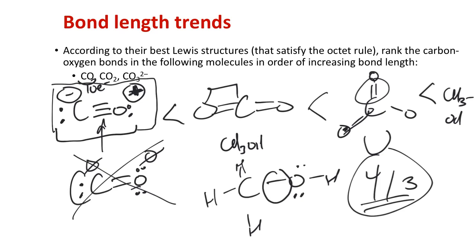We use Lewis structures to build a model to help us understand the bonding in molecules. Some structures have resonance and need more than one Lewis structure to describe them, while others like CO2 or CO need only one Lewis structure to understand most of their properties. That's all for this video — thanks for the attention, I'll see you in the next video.